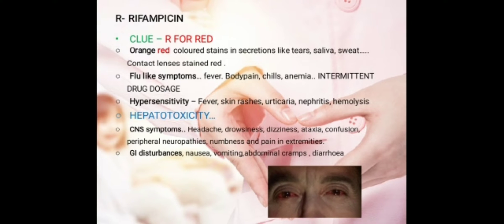R for Rifampicin. The clue here is R for red — orange-red color stains appear in secretions like tears, saliva, and sweat because the drug is red in color. It will stain all your secretions. If the person is using contact lenses, those will also get stained red. Then hepatotoxicity occurs here as well. Fever and flu-like symptoms can happen — fever, body pain, chills, and anemia — which occur with intermittent drug dosage. Along with fever, hypersensitivity reactions like skin rashes and urticaria can occur.